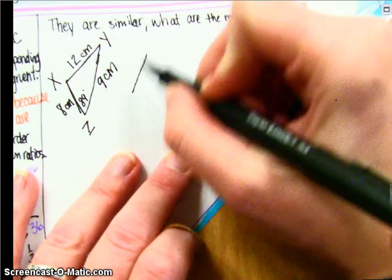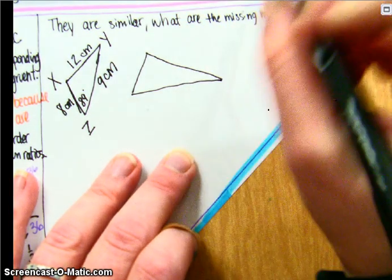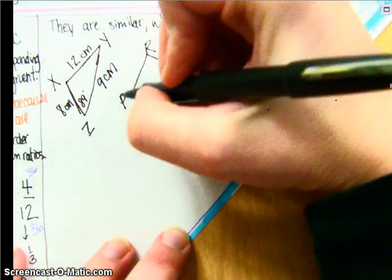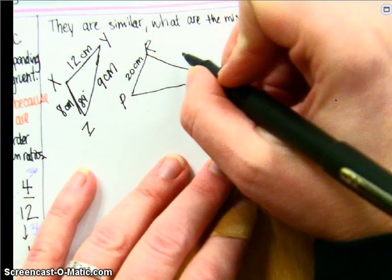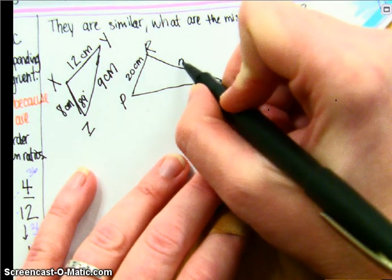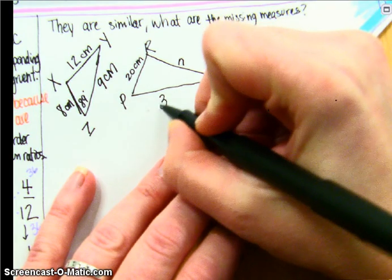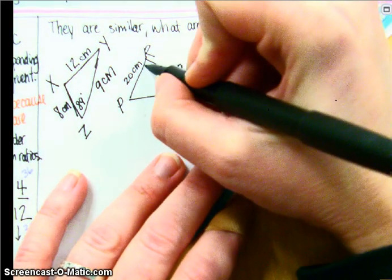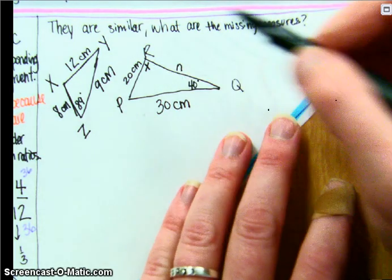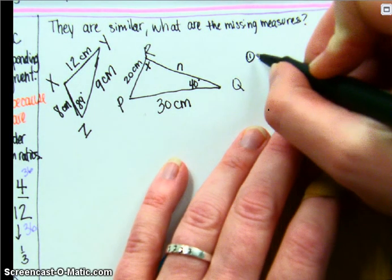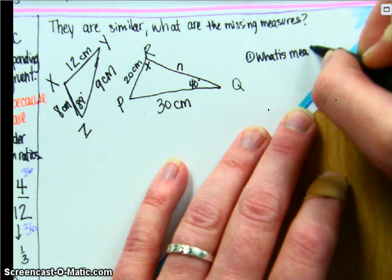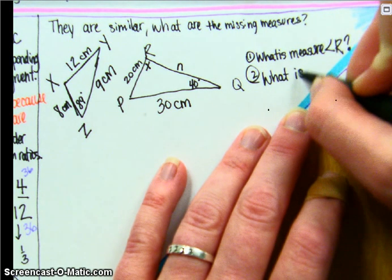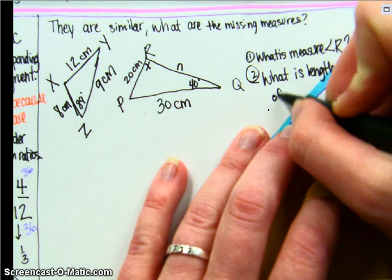Triangle PQR, angle P we do not know it is a variable N, PQ is 30 centimeters, angle Q we know is 40 degrees, and then angle R is also a variable. So we will be looking for what is the measure of angle R? And second, what is the length of RQ?